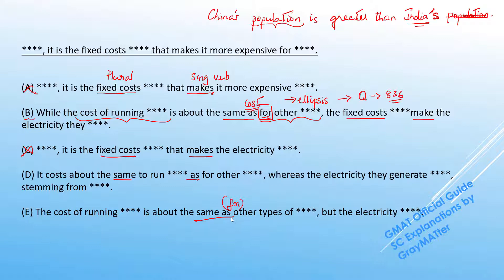But since E drops that preposition for, what is actually being compared here is the cost of running these plans to the other types of plans itself. So the cost being compared to other plans. And that is not a logical comparison. E goes off.